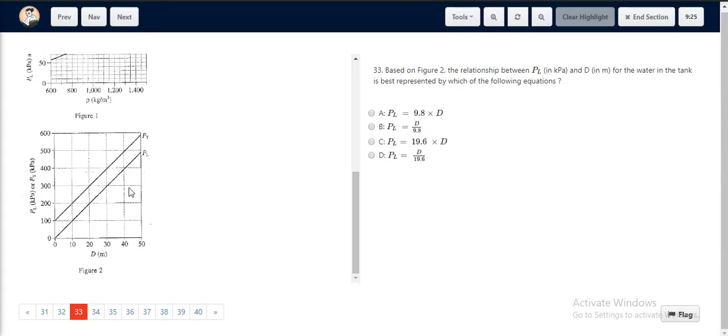For question number 33, we look at Figure 2. If you look at the relationship between PL and D, it's a linear relationship with the line passing through zero or the origin.